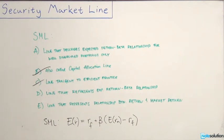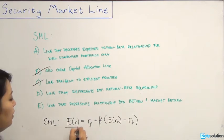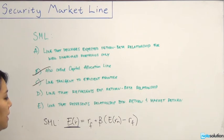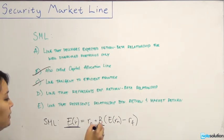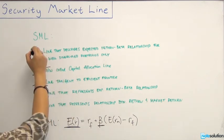Looking at option A — the line that describes the expected return beta relationship for well diversified portfolios only — we do know that the SML describes the relationship between expected return (ER) and beta. But we also know that this applies to all risky assets, not just well diversified portfolios. So we can eliminate A.